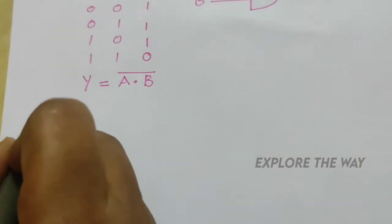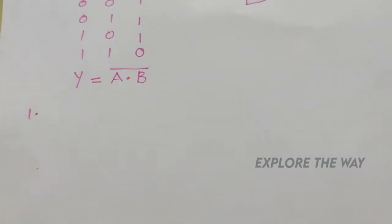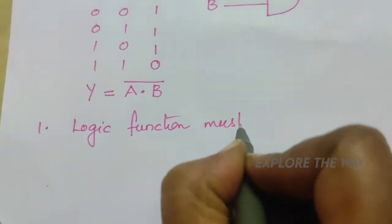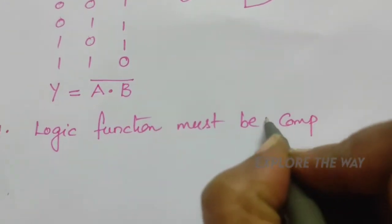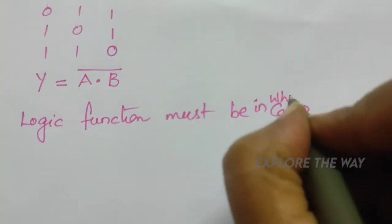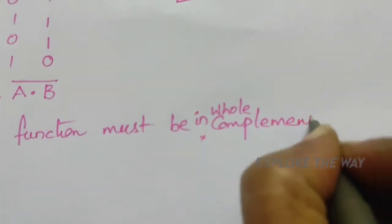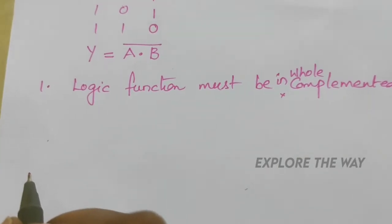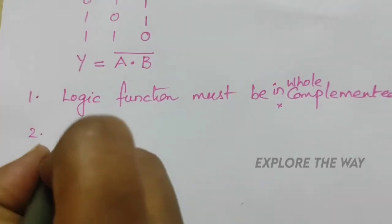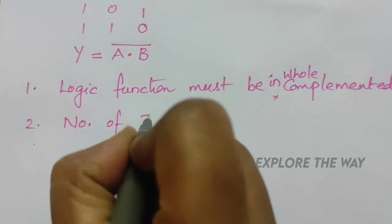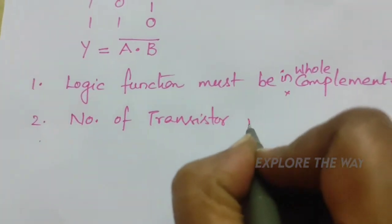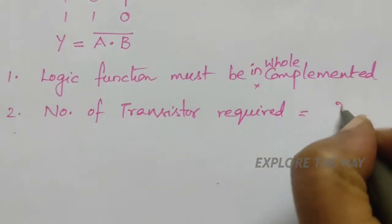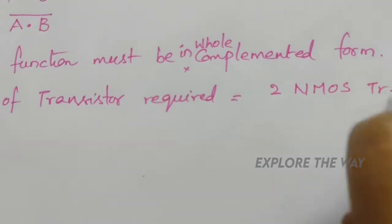The first step is that the logic function must be in whole complemented form. Here the logic function already has a whole complemented form. The second step is to identify how many transistors are required. To implement a two-input NAND gate, it needs two NMOS transistors and two PMOS transistors.